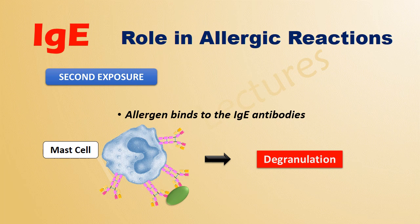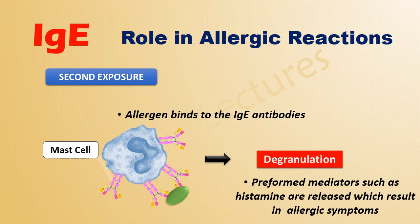As a result of degranulation, there is a rapid release of preformed mediators from the granules — for example, histamine and heparin. These mediators further result in vasodilation, increased vascular permeability, and smooth muscle contractions. This reaction is known as an allergic reaction. Thus elevated levels of IgE antibodies in the body are of diagnostic significance — elevated levels of immunoglobulin E indicate the possibility of an allergic reaction or parasitic infection.